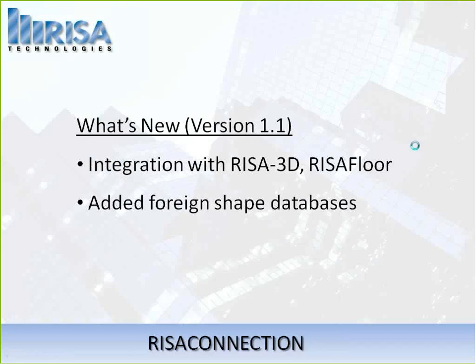Regarding RISA Connection, version 1.0 has been out for a while as a standalone program, and we're going to talk about what's new in version 1.1. Everybody who already owns version 1.0 is automatically getting this version 1.1 upgrade. Aside from all of the Shear and Moment Connections and standalone functionality that previously existed in version 1.0, we've now added full integration with RISA 3D and RISA Floor, and we've also added foreign shape databases.